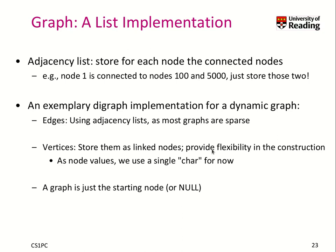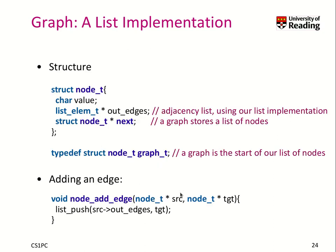This implementation provides some flexibility of construction. A graph is just a starting node, or null if there exists no such node. Let's have a look at the structure. A node has a value, and it has a list of outgoing edges which is our adjacency list, and a connection to the next node if there exists any. We store our graph as an additional list of nodes such that we can always traverse a graph even though it has no potential edges. The graph itself is just a node in this example.